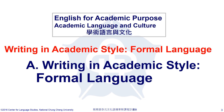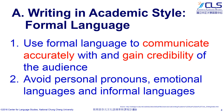In terms of academic writing, it is important to stay objective and formal. It is suggested to use formal language to accurately convey ideas and also gain trust from the readers. We can do this by avoiding personal pronouns, emotional language, and informal language.